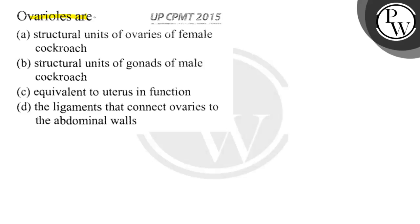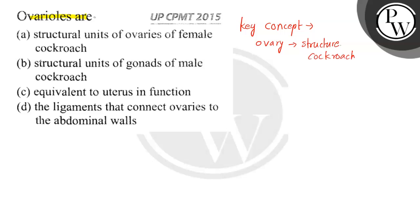The key concept is that the female reproductive system is an important organ - the ovary. In cockroaches, female cockroaches have wing-like structures present which are ovaries.